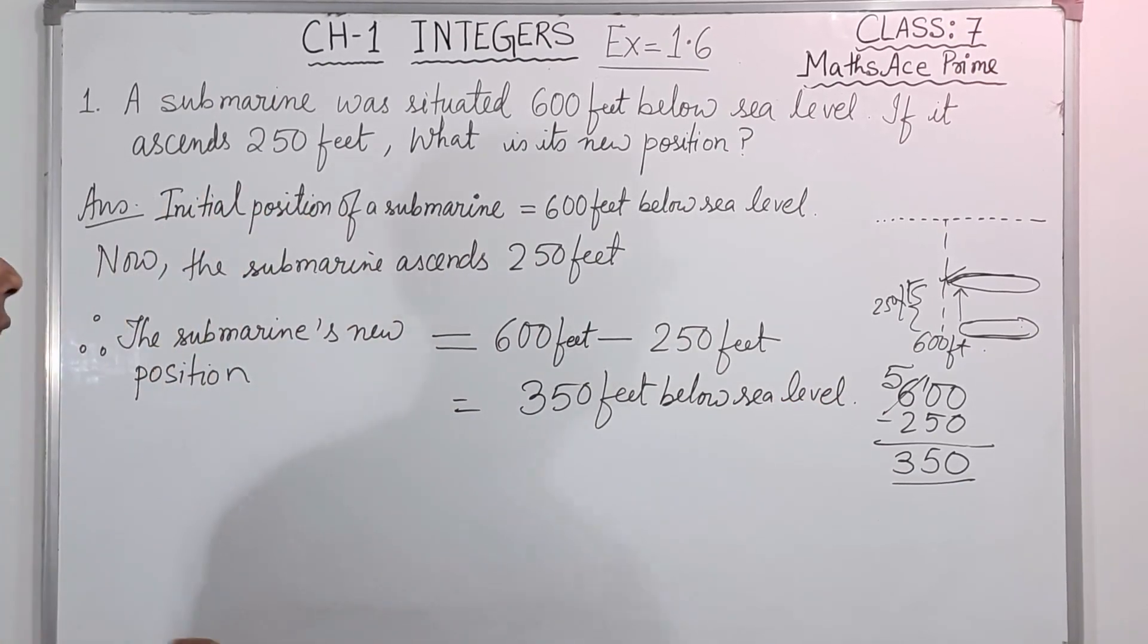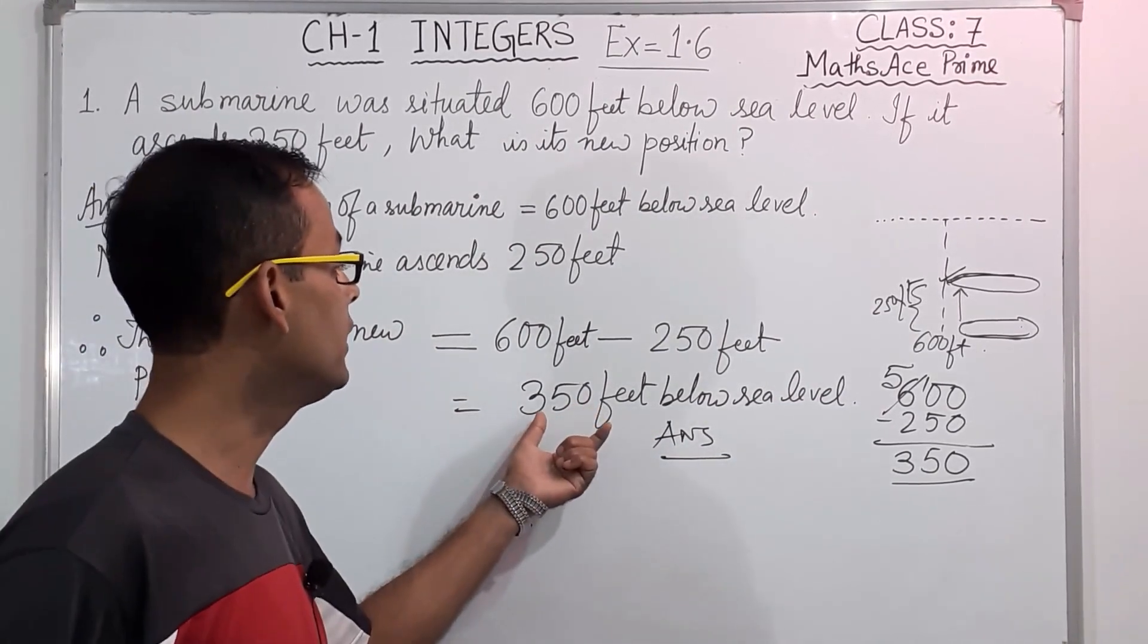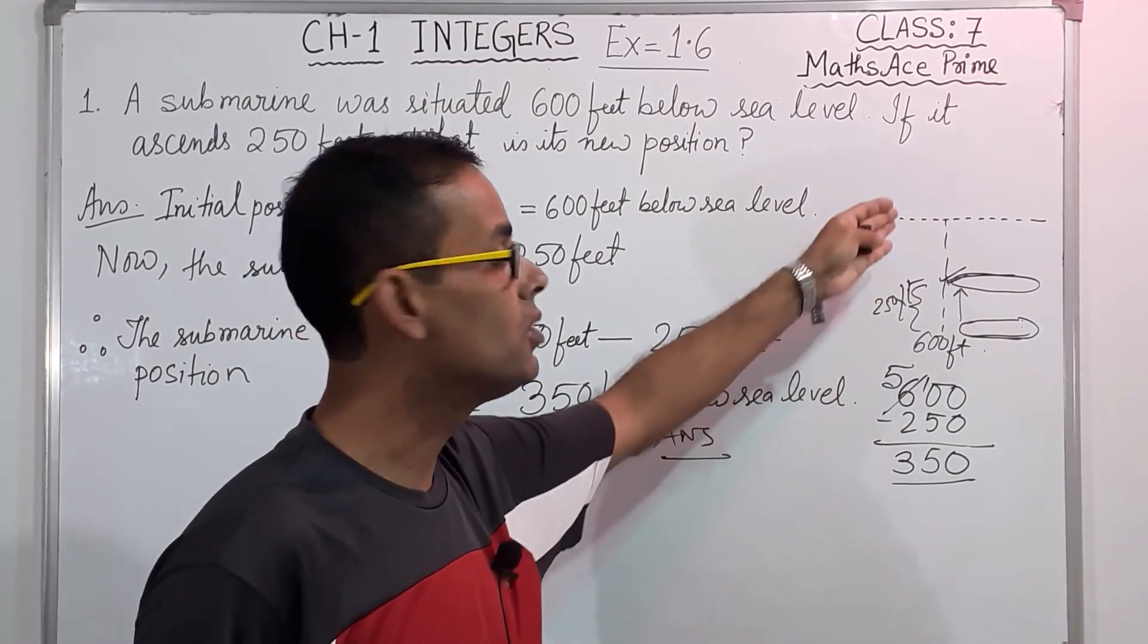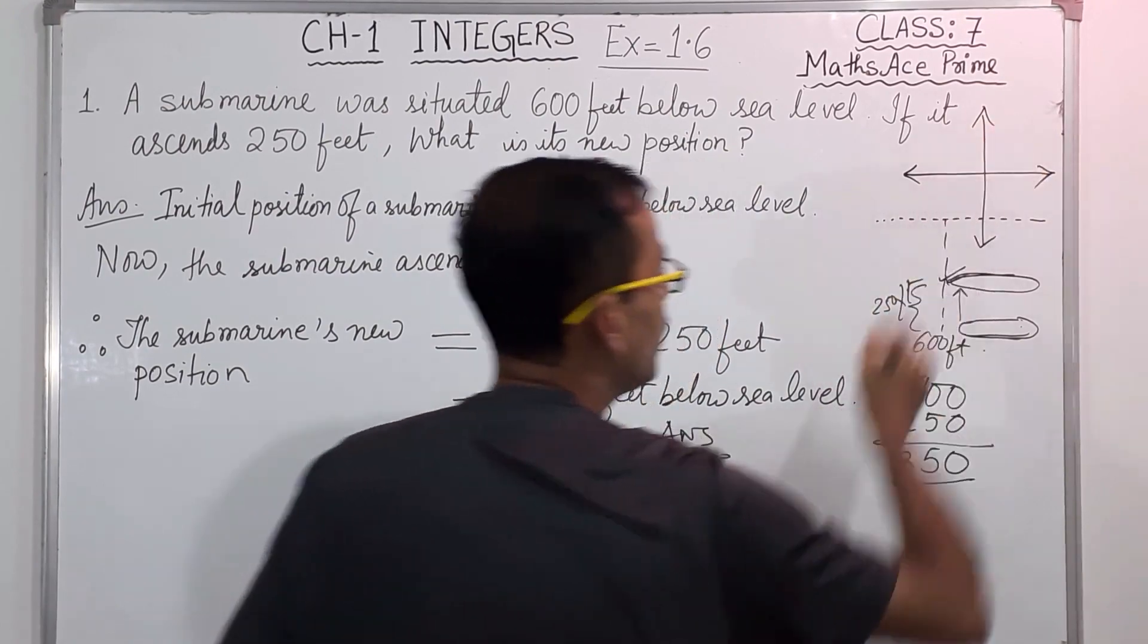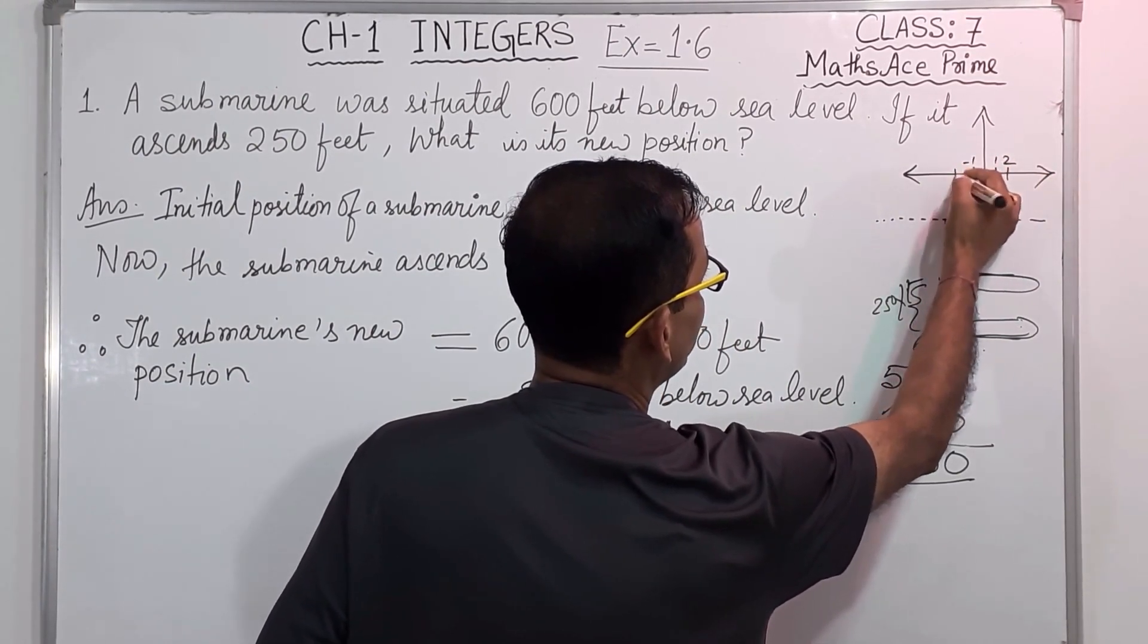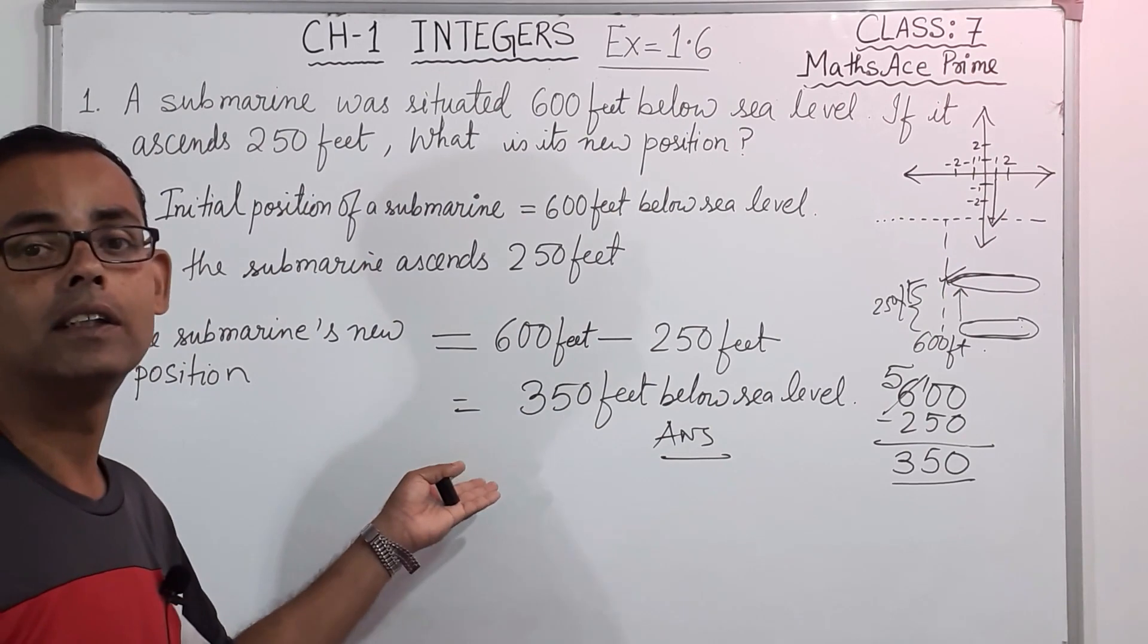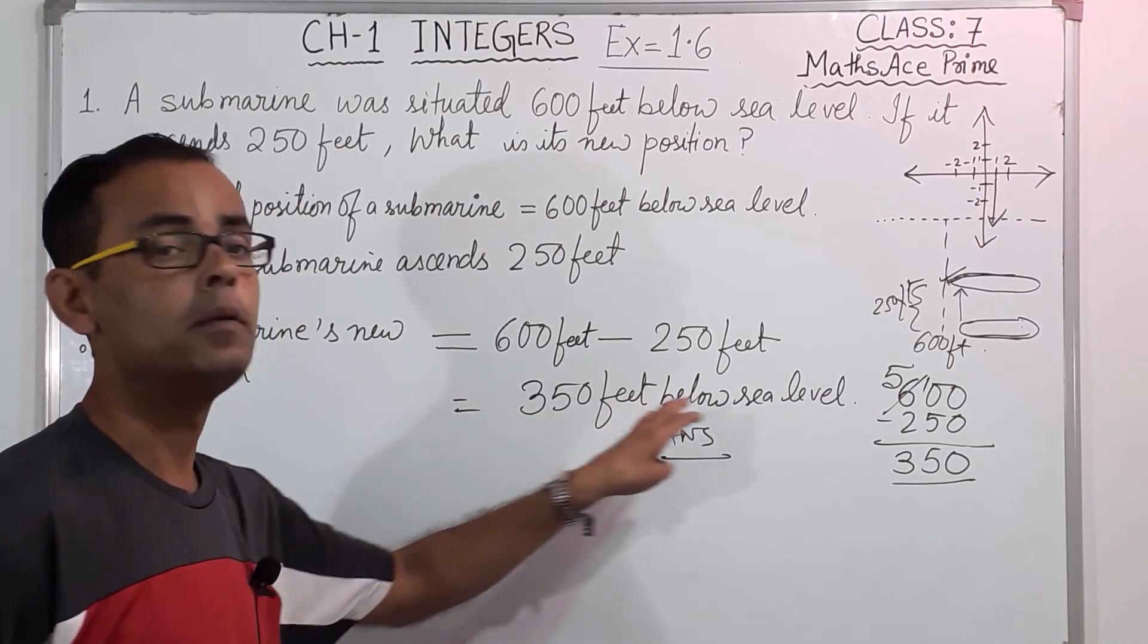And this is the answer. This answer can be written as minus 350 feet. That is also correct. Why minus 350? Because anything when we measure below the sea level, it is minus. Because, afterwards, when you will go to higher classes, coordinate geometry will be there. And there, see here, like this way, these are positive. 1, 2. This is negative. Minus 1, minus 2. And this is 1, 2. And this side is minus 1, minus 2, like this way. So it is going below the sea level, downside. So that's why the answer can be minus 350 feet. And if you don't want to write that minus 350, then you have to write 350 feet below sea level. I think question number 1, you have understood nicely.